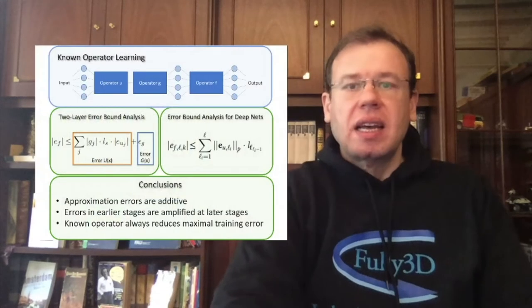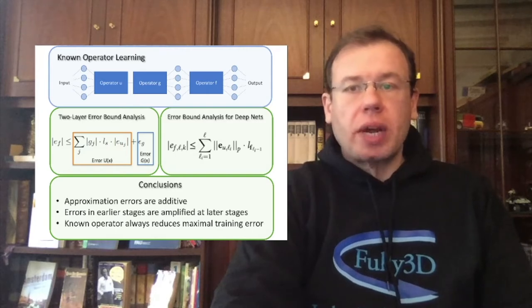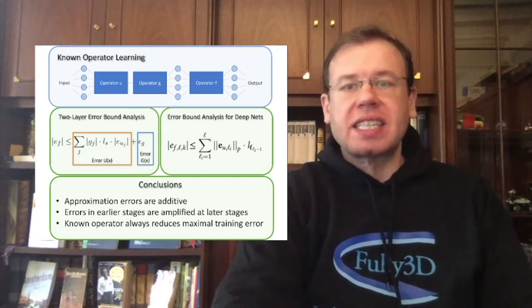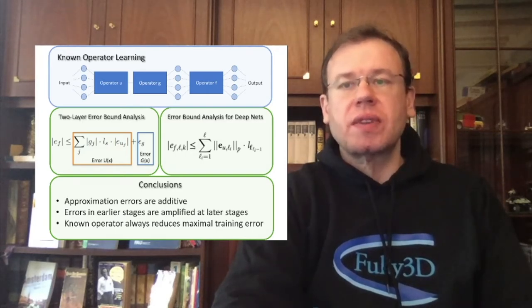Second, the computational efficiency of a fast Fourier transform can never be reached with this approach. If you already know that a specific function is required to solve a particular problem, it comes to our mind to ask the question of whether it would not be of advantage to include it into the structure of our network as a kind of prior knowledge. The method of known operator learning investigates exactly this procedure in a new theoretical framework.